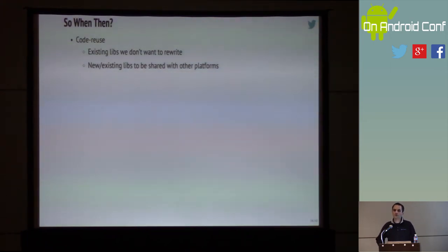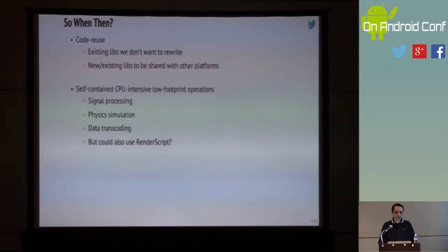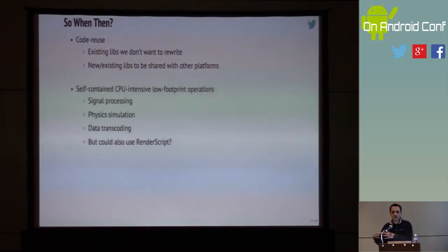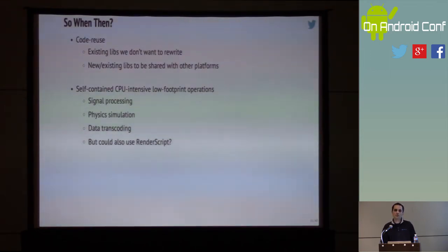Sometimes it's not only for legacy code. For example, if you want to reuse code across different platforms like iOS and Android, going native is — believe it or not — a portability solution. And if you know some code is extremely self-contained, very low memory footprint, and you can build a coarse-grained API that doesn't require too many transitions from Java to native, then things like signal processing, physics simulation, and data transcoding lend themselves well to a native implementation. Although Android also ships with RenderScript, which is another interesting API to explore for this use case.